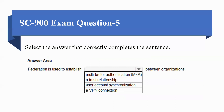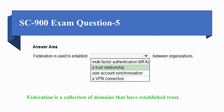Moving towards the next question: Federation is used to establish — MFA, a trust relationship, user account synchronization, or a VPN connection between organizations? The correct option is B, a trust relationship, because Federation is a collection of domains that have established trust.